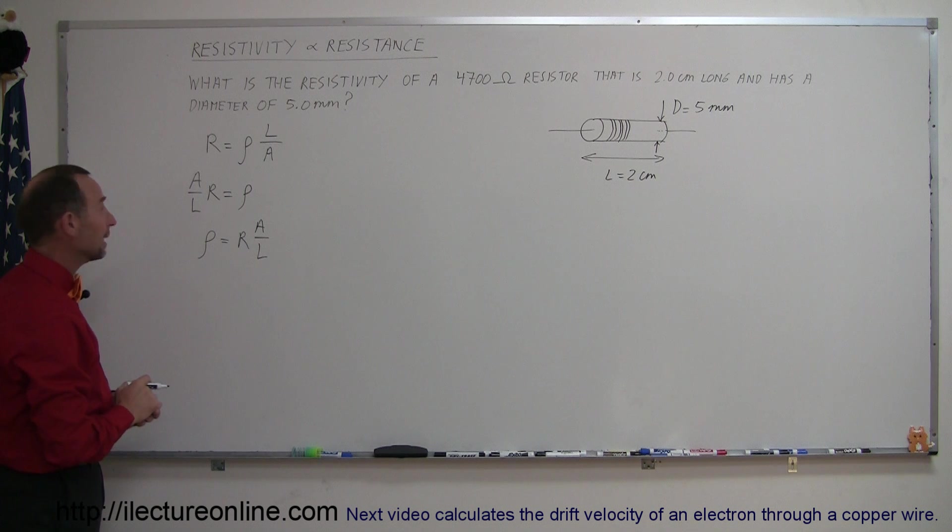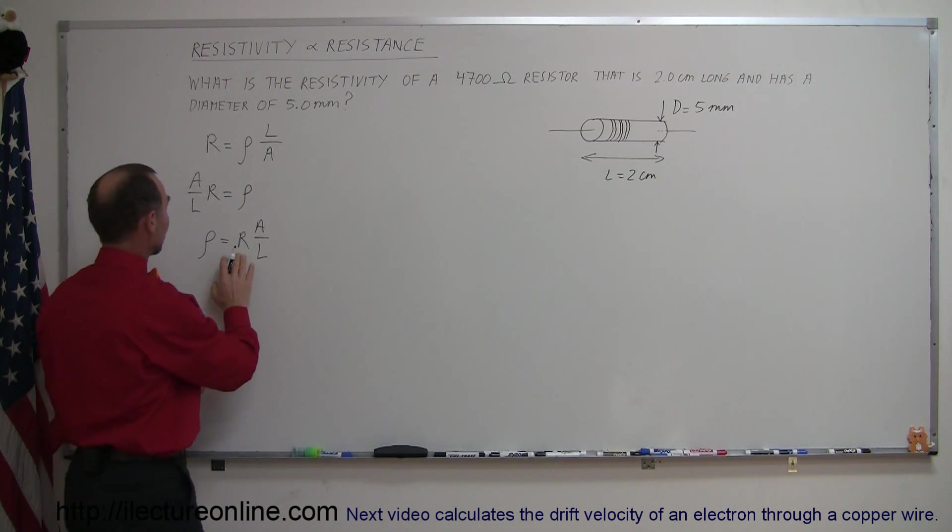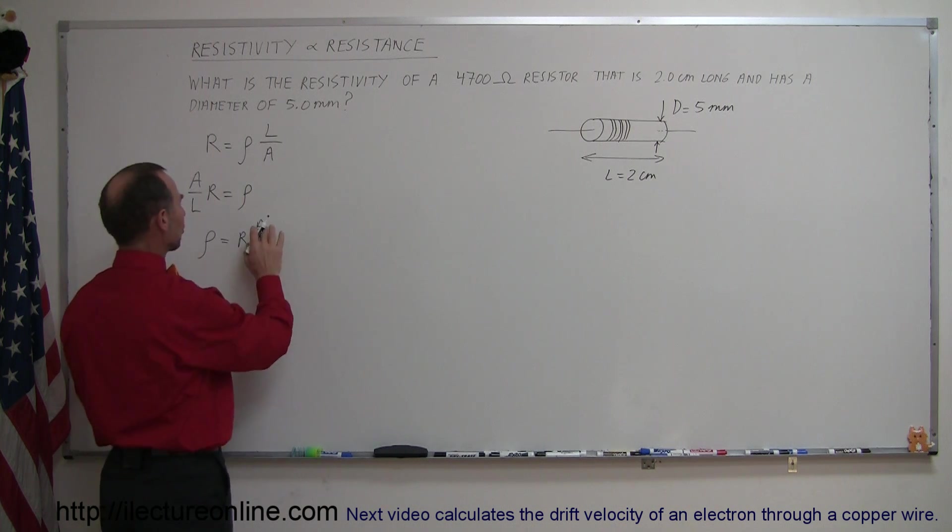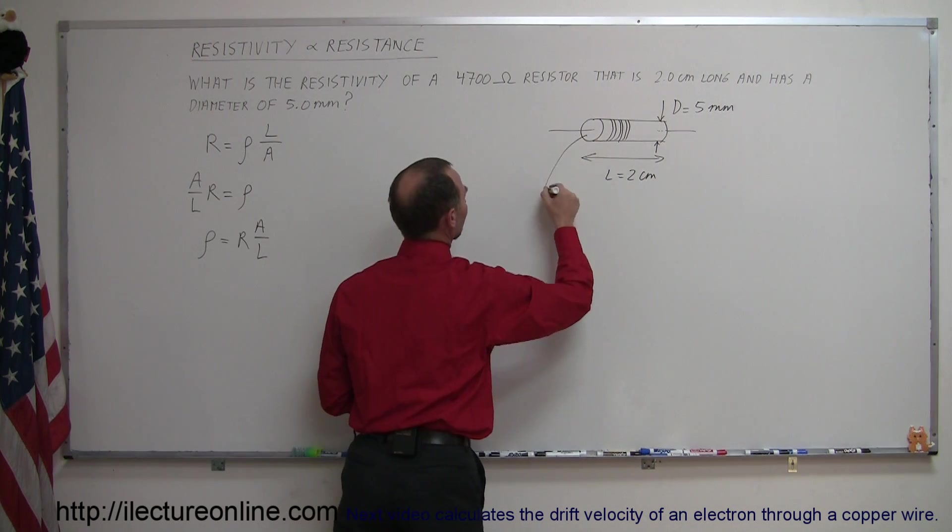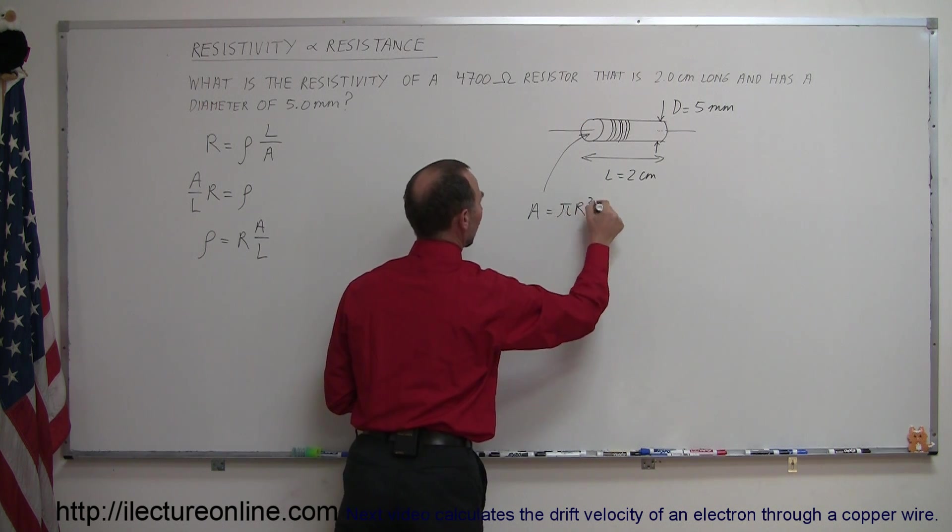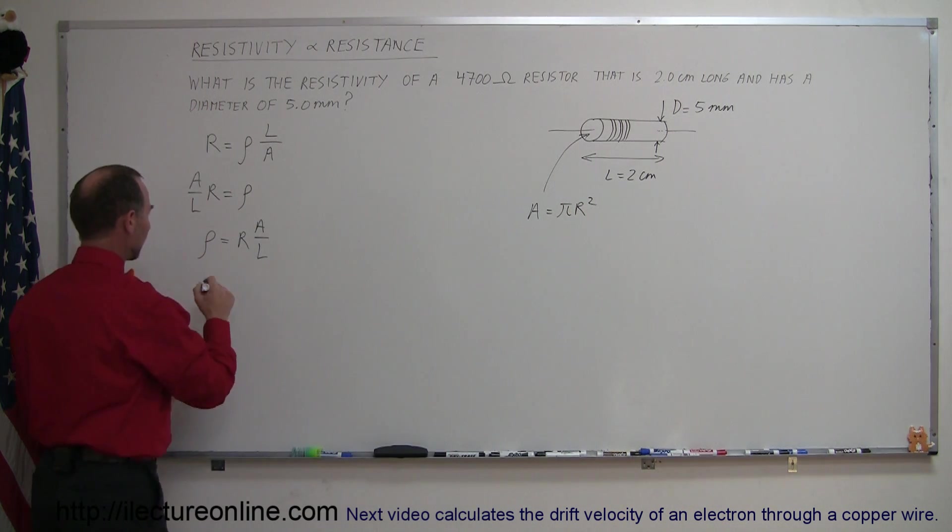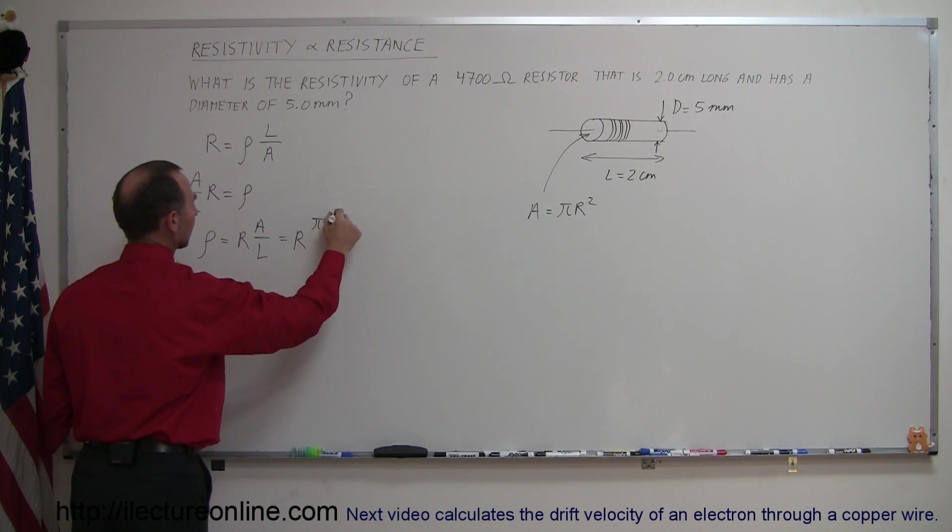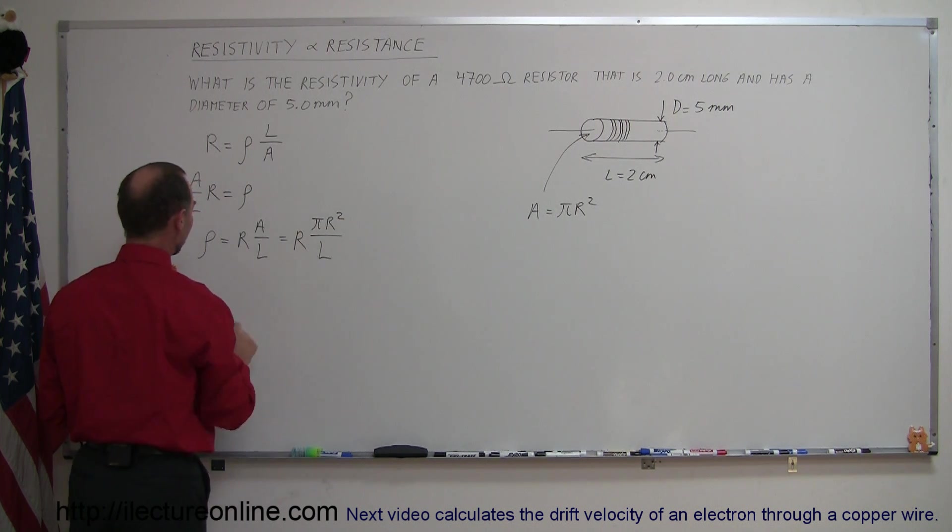Now, plugging in the equivalences, we have the resistance here. Actually, what I'll do is change the cross-sectional area, because that's this right here. The cross-sectional area is equal to π times R squared. So let's replace that. This equals the resistance times π times the radius squared divided by the length.